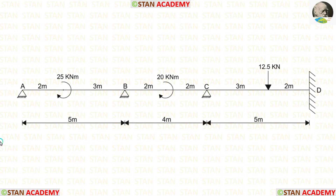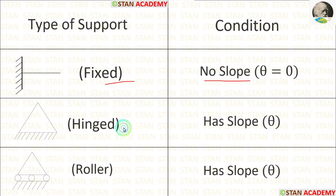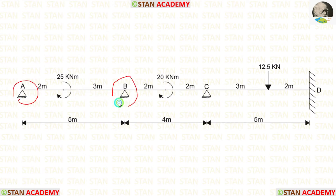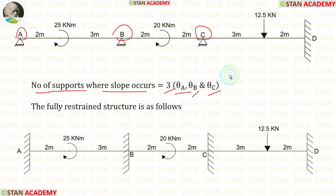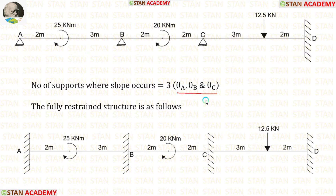In the stiffness matrix method, we have to check the number of supports where slope can occur. In a fixed support there will be no slope; in a hinged or roller support there will be slope. In this beam, points A, B, and C have hinged supports, so the number of supports where slope occurs is 3. These give us unknowns theta_A, theta_B, and theta_C — 3 unknowns in total. If we calculate these, we can easily find the final moments.